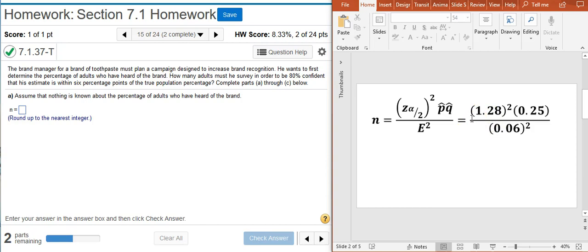In that case, the most conservative percentage that we could select for p-hat is going to be 1/2, which then means q-hat is also 1/2. 1/2 times 1/2 gives us 0.25. And then we want to be within six percentage points, so notice how we write that here: six percentage points of the true population percentage.